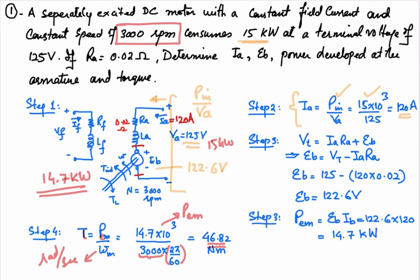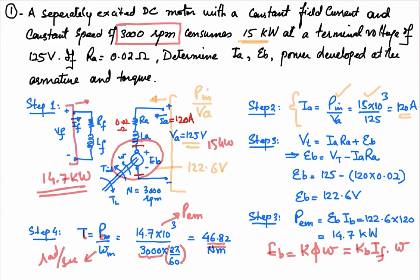The key steps are: draw the equivalent circuit, then determine the back EMF. Back EMF plays a very important role in machine operation. Whenever load is applied, the back EMF adjusts to a new value so that a new current is established and the machine delivers the required power or operates at a new speed. As discussed in theory, back EMF equals k × flux × omega, and can be written as Kb × If × omega. It can be controlled by controlling the field current If and the machine speed.